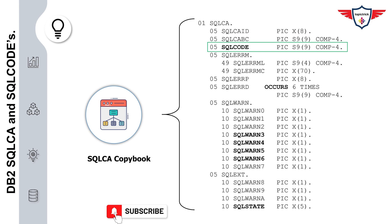A positive value of SQLCODE indicates that the SQL statement executed successfully but there is a warning associated with that execution. For example, a return code of +100 means the statement executed successfully but no row was returned. A negative value of SQLCODE indicates that the SQL statement failed due to some internal error — for example, -805 or -811. You should have specific logic to handle these negative SQLCODE values, otherwise your program will fail.